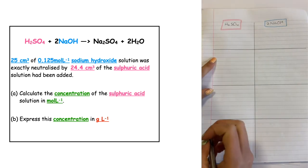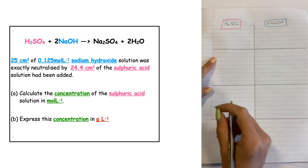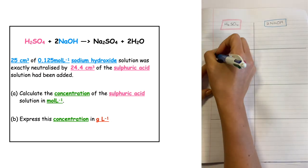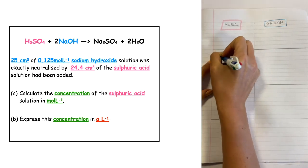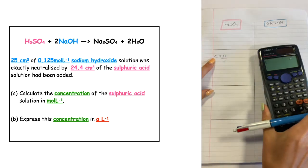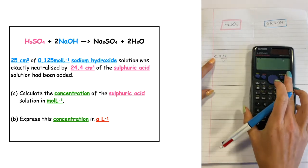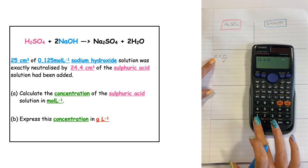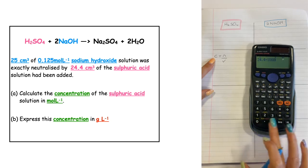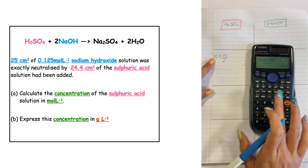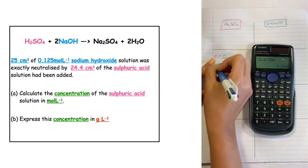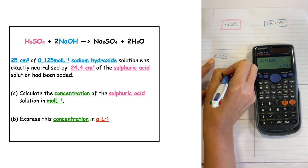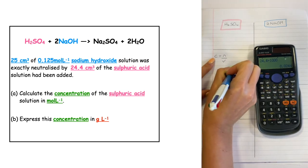We're going to write in our formula for what we are trying to work out. We want to find C, where C is equal to N over V. The volume given in the question is 24.4 centimeters cubed, and we need to divide that by a thousand to convert it into liters, which gives us 0.0244 liters.